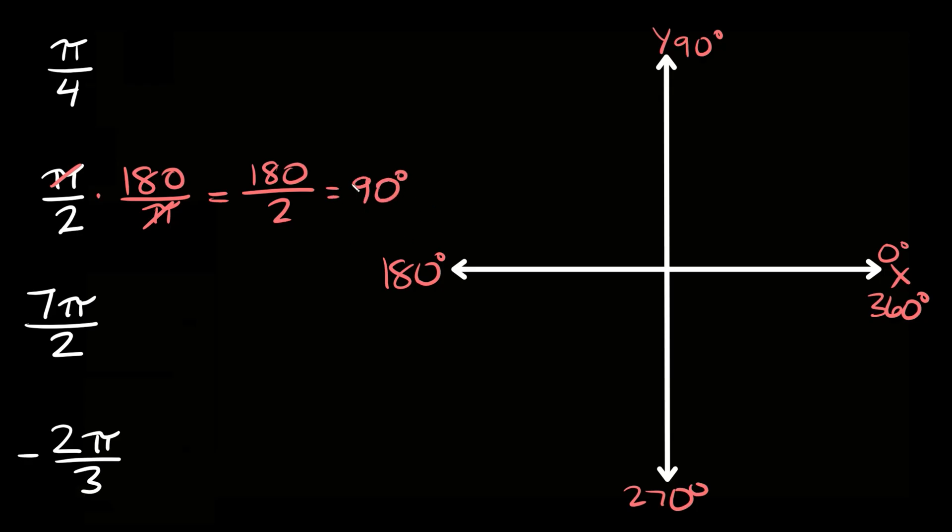So here we have a positive 90. So again we're going to start at the exact same spot, we always start along this spot, this is always our initial arm, and then we're going to rotate positive 90 degrees. So positive 90 is going to be up here. So then we have our positive 90 degrees right there.